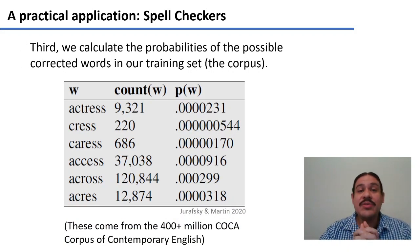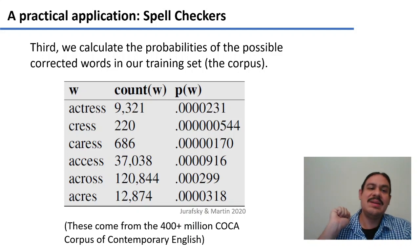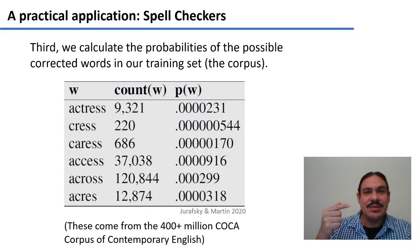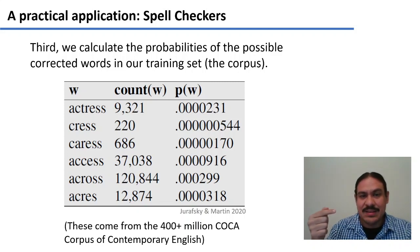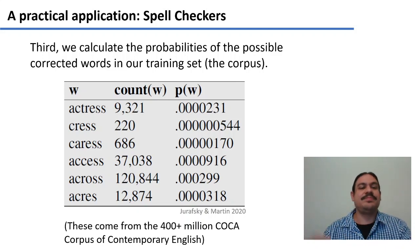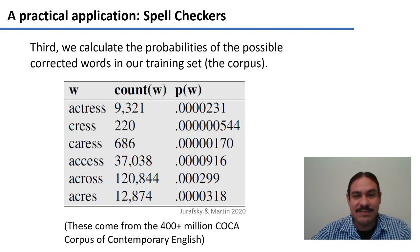We need to calculate the unigram probabilities for each of those words. For example, 'actress' occurs 909,000 times in the COCA corpus, which has about 400 million words in English, giving it a probability of 0.00000231. The word 'cress' occurs fewer times, so its probability is two orders of magnitude less. However, 'across' happens 120,000 times, so it also has a very high probability.